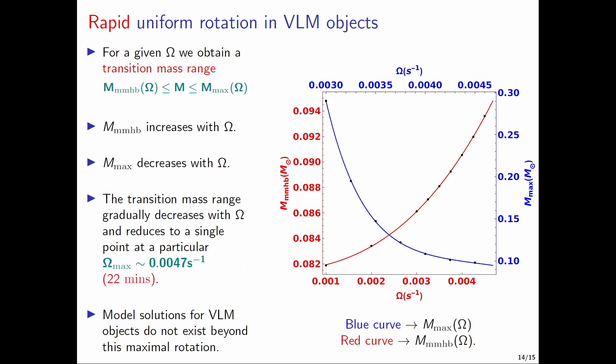Finally I would like to mention that we have studied rapid uniform rotation in very low mass objects where we have obtained this transition mass range which says that a given very low mass object with a given angular rotation speed can evolve into the main sequence phase provided its mass lies within this particular range. Because of the opposing behavior of the two extreme limits with an increase in omega as can be seen from this plot, we obtain a theoretical upper limit on this rotation parameter which corresponds to a rotation period of 22 minutes.